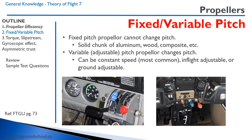Here are the engine controls you'll see on the left side, probably in a Piper aircraft. We have the throttle in black, then the blue knob is our propeller speed control, and then the red is our mixture control. On a Cessna 182, the throttle is black, the prop control is blue, and the mixture is red.